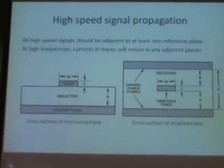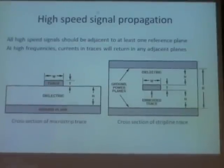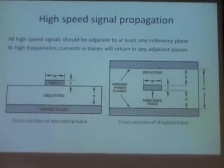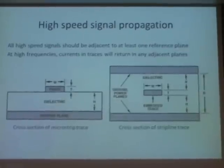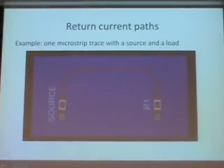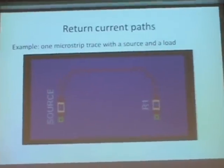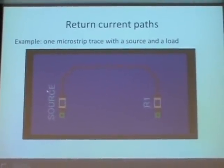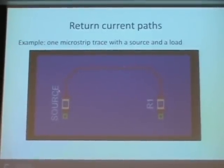I divide things into how to keep the integrity of intentional signals — ensuring a signal sent to another part of the board arrives without distortion — and how to deal with unintentional signals. Starting with intentional signals: you should assume every high-speed trace will propagate as either a microstrip or a stripline if you have more than two layers. A microstrip is simply a trace above a very wide ground plane; a stripline is a trace buried between two reference planes.